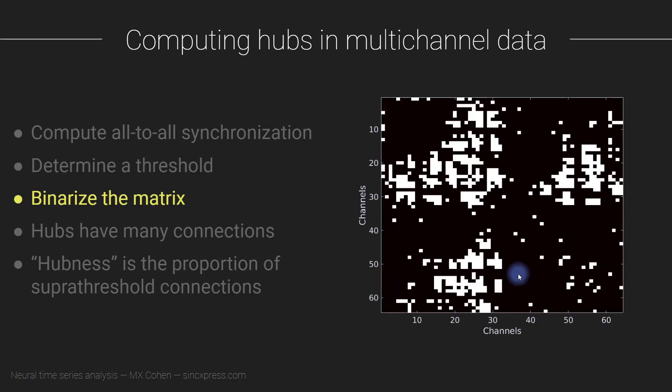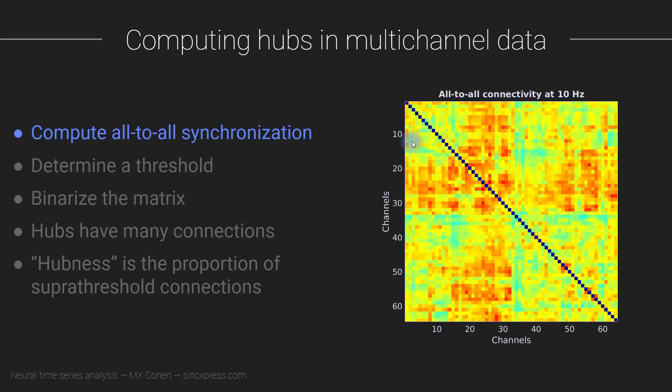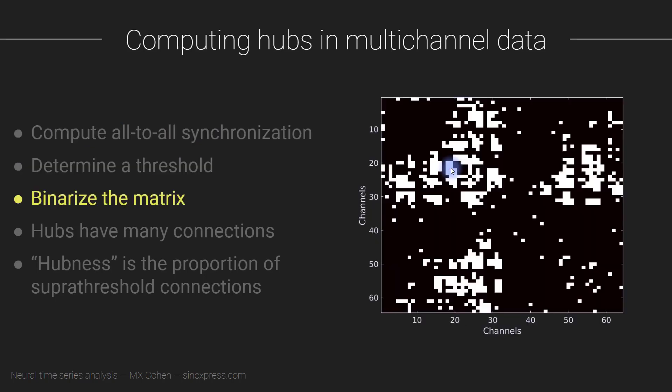Now we have this threshold at 0.47 or whatever. You go back to the connectivity matrix and binarize it. You go through each pixel and ask: is this pixel value greater or less than 0.47? Values less than the threshold get set to zero. When we get stronger connectivity values that are greater than 0.47 - larger than our threshold - those values get set to one. This gives us all zeros and ones, like falses and trues for below and above threshold.